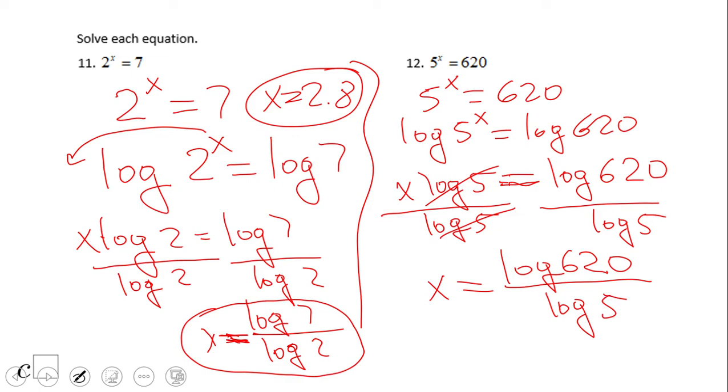For problem 12, if you end up with this solution, x equals log of 620 divided by log of 5, then you did a good job. Let's evaluate that using the calculator and we get 3.9, almost 4. In fact, 3.99, which makes sense because 5 to the 4th power is 625.